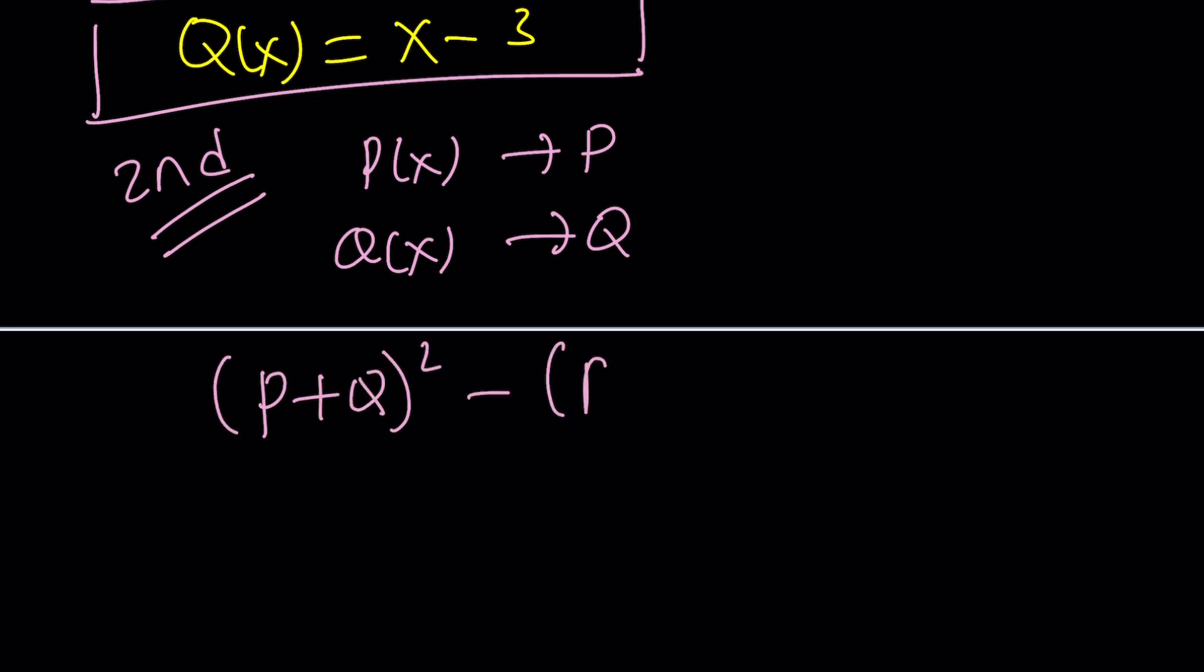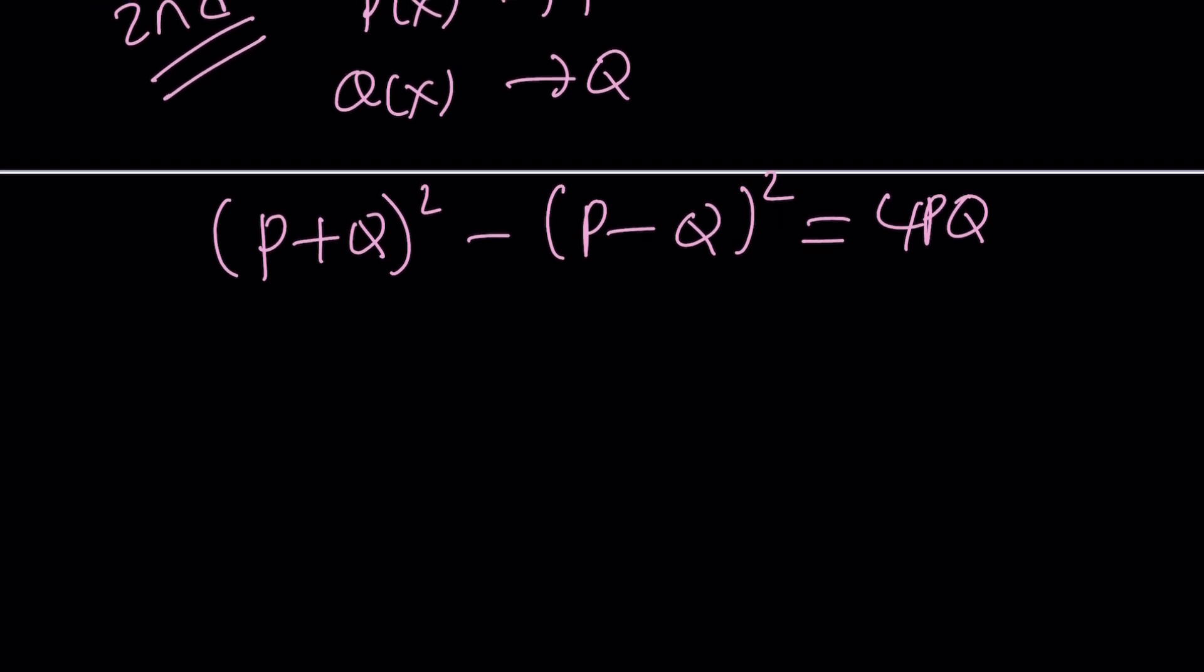So the identity goes as follows: (P + Q)² - (P - Q)² = 4PQ. This is something really amazing because if you subtract these two things, the P², Q² all cancel out. You end up with 2PQ, but you get it twice. Learn this identity because it's very helpful.